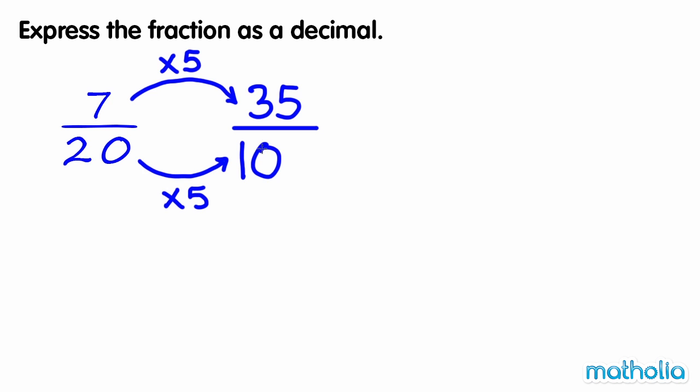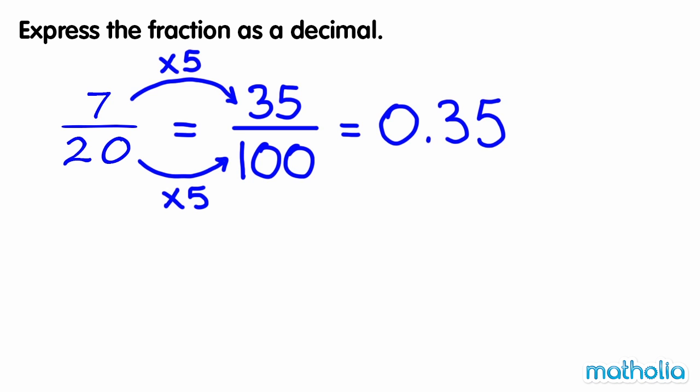7 twentieths is equal to 35 hundredths, which is equal to 0.35. So 7 twentieths equals 0.35.